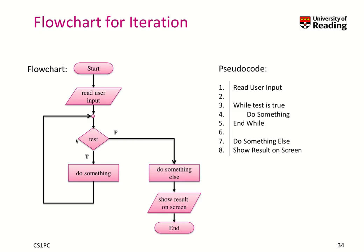For iteration there is no specific symbol — it's not necessary, because an iteration means repeating a sequence based on a condition. While a test is true, we do something. For example, while the weather is sunny, we go outside and sunbathe, then go back to the test — is it still sunny? If yes, we do something again, and so on. At some point it's not sunny anymore, so we do something else, like getting inside, and then show the result on screen.